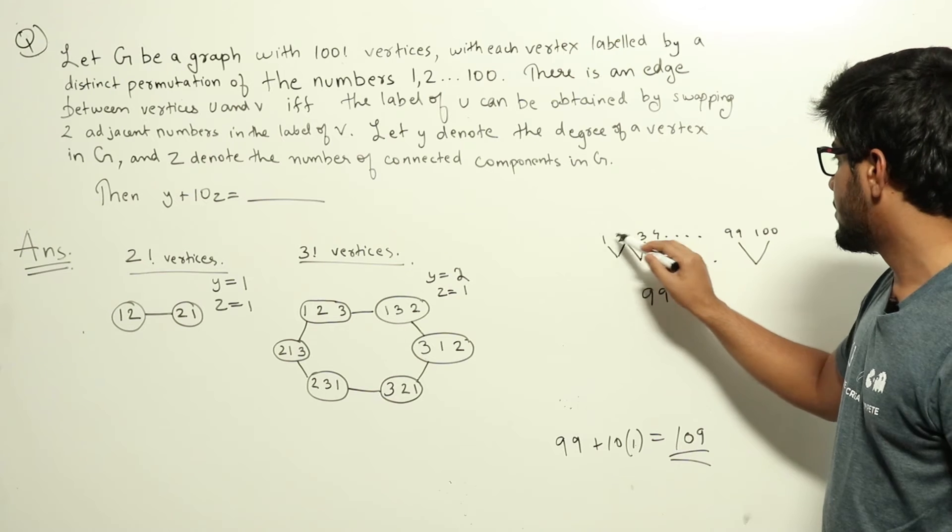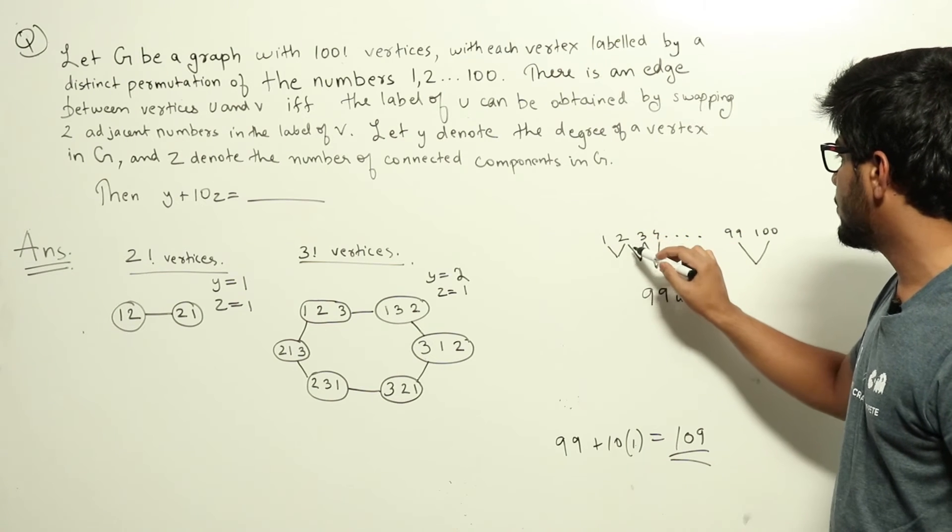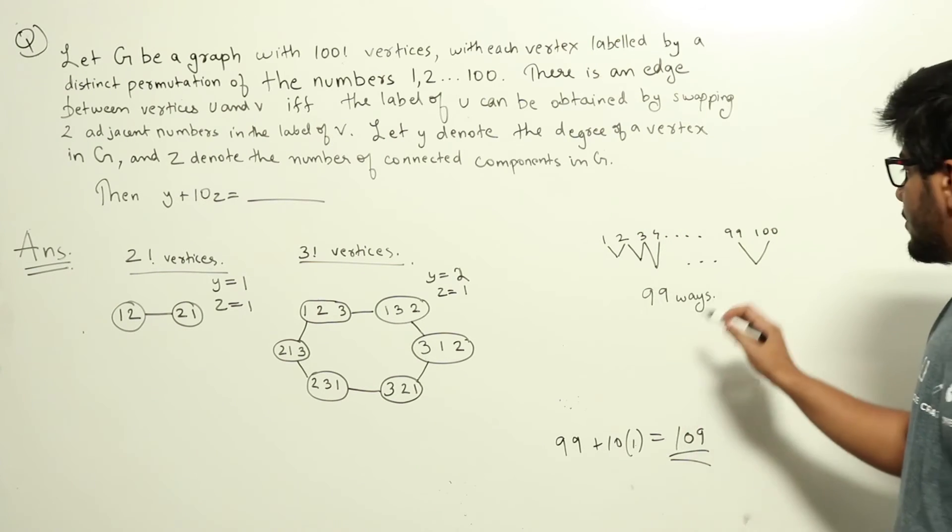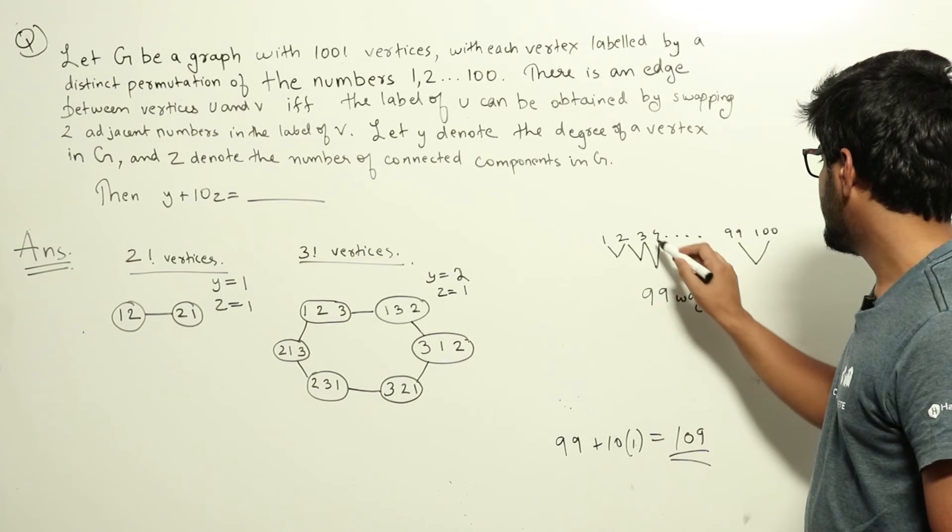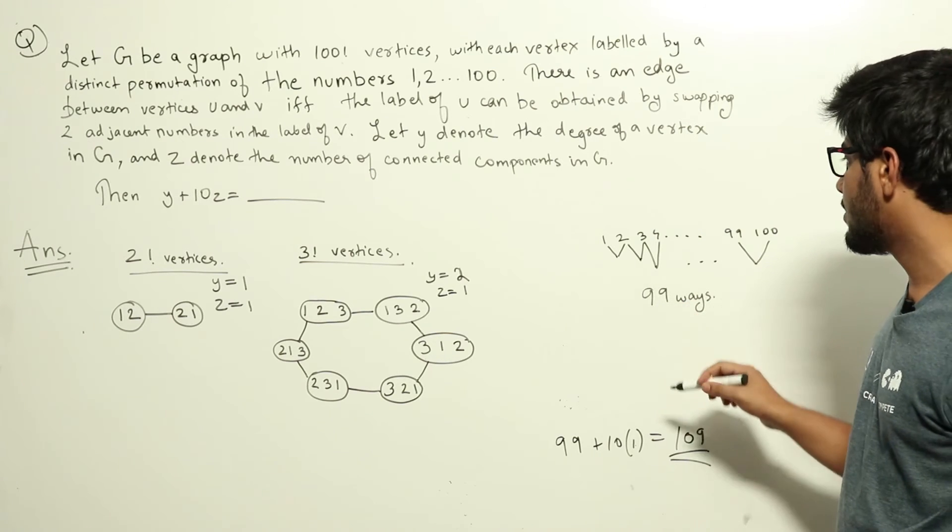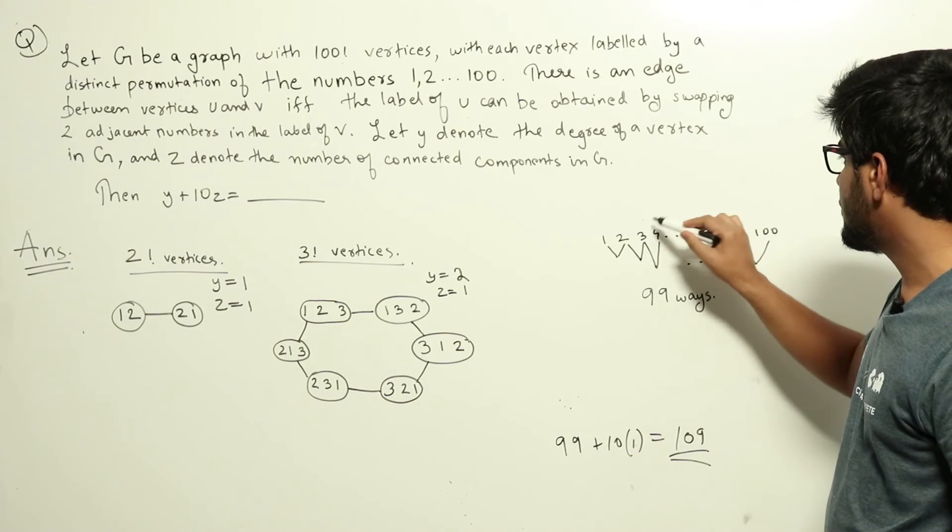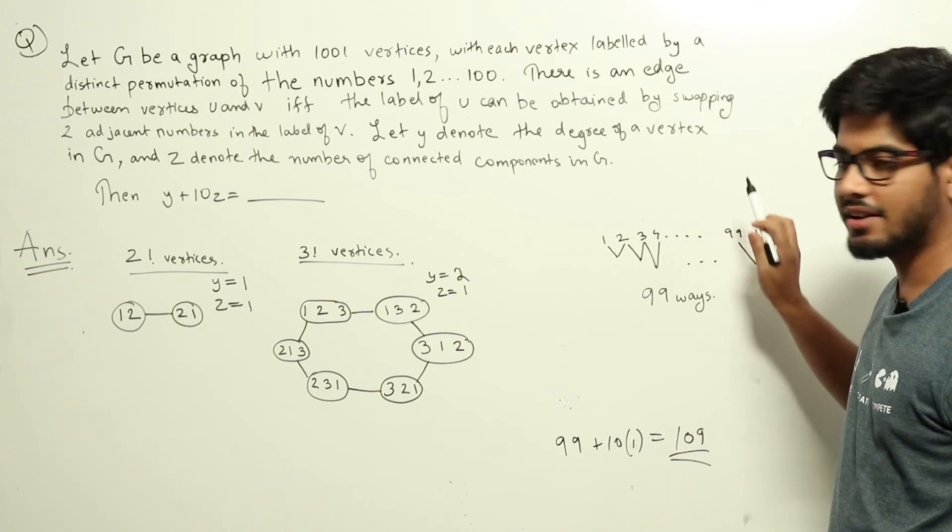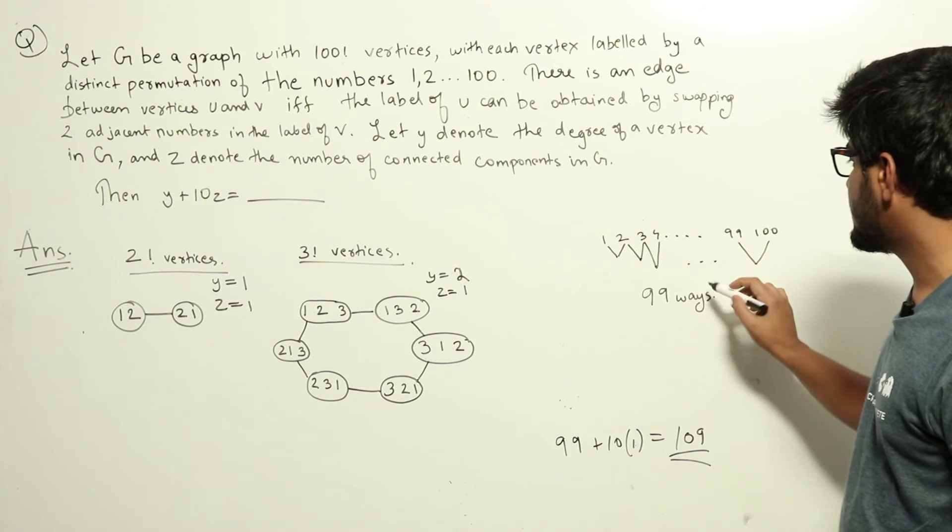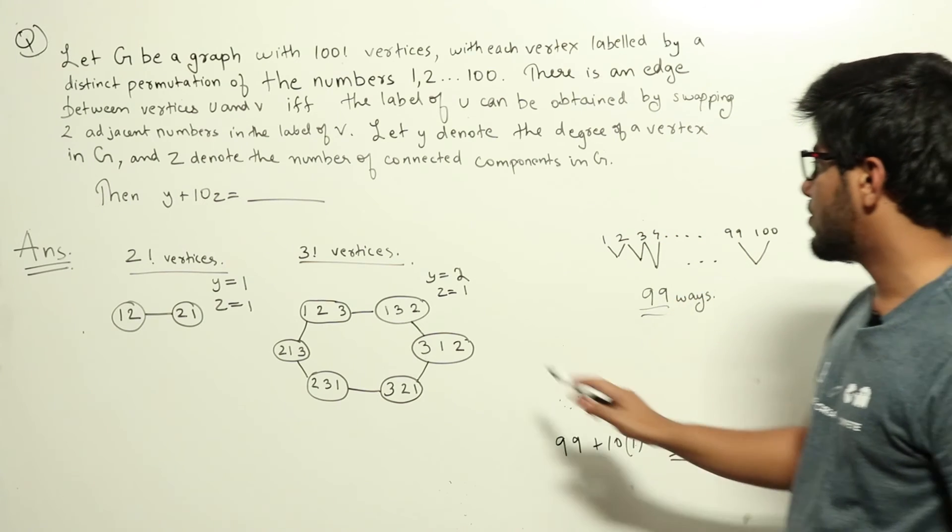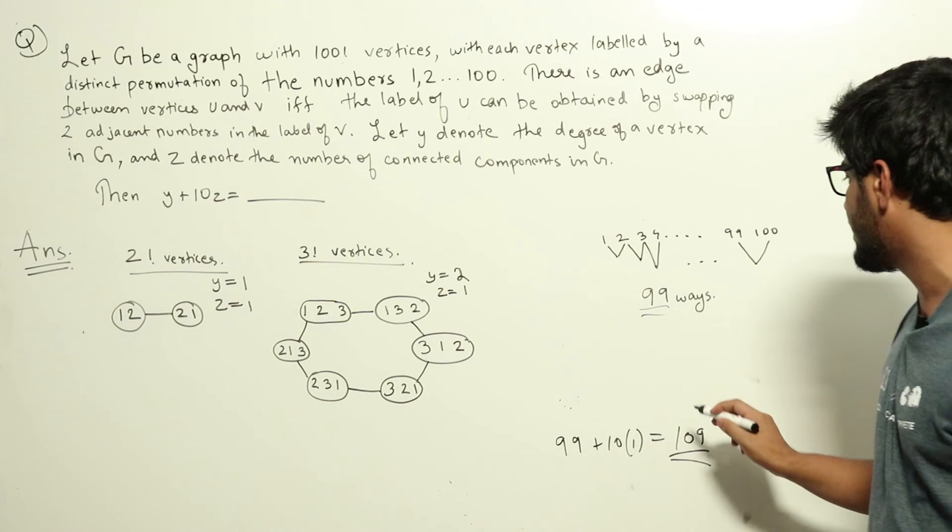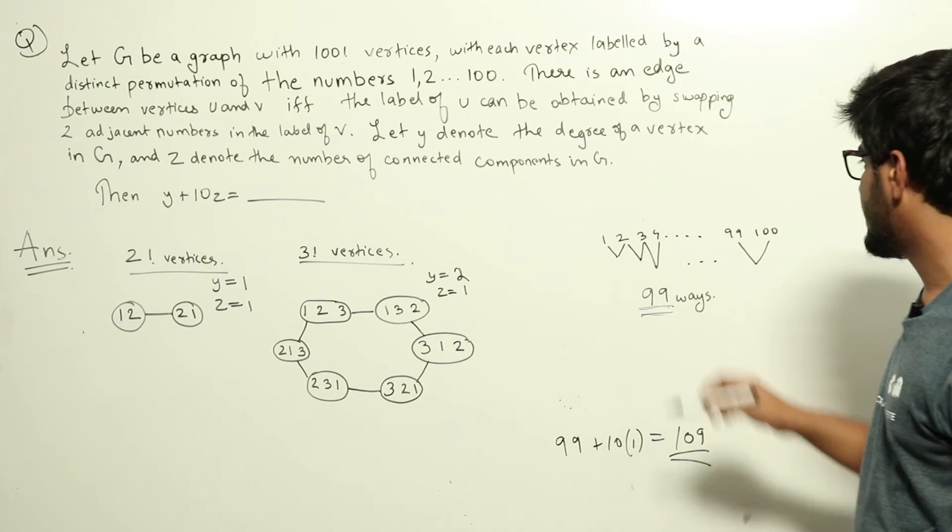From 1 and 2, from up to 1 to 100 I can swap 1 and 2 or 2 and 3 or 3 and 4 up to here. 99 or 100 we can swap. So we can do this swapping in 99 ways and obtain a new node. So from this node there will be 99 edges going outside. So the degree of this vertex will be 99. This follows our pattern. For 2 y was 1. For 3 y was 2. Here it will be 99. That is proven here.